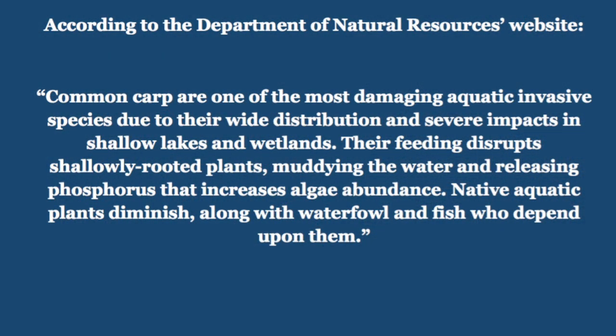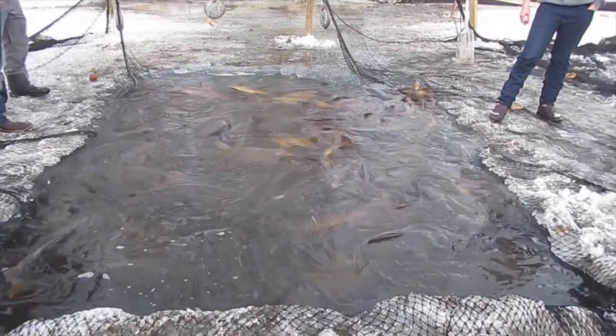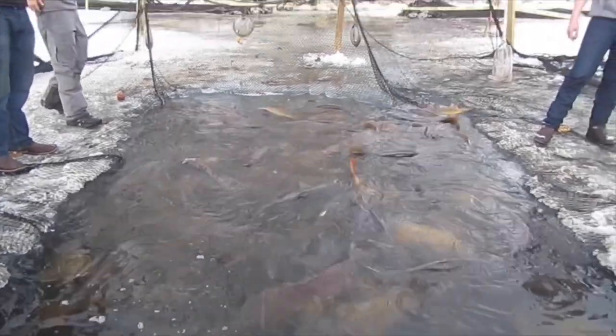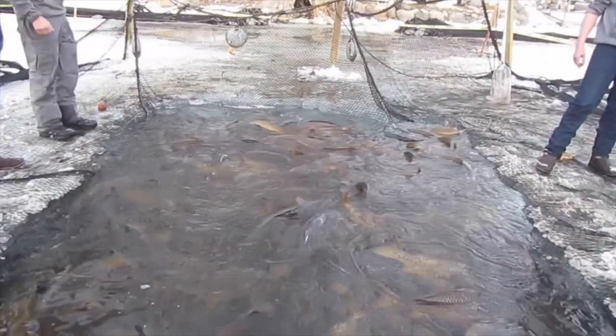Did you know that Common Carp are one of the most damaging aquatic invasive species due to their wide distribution and severe impacts in shallow lakes and wetlands? Their feeding disrupts shallowly rooted plants, muddying the water and releasing phosphorus that increases algae abundance.